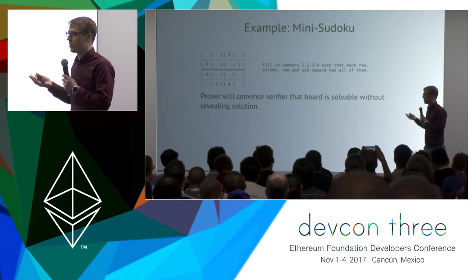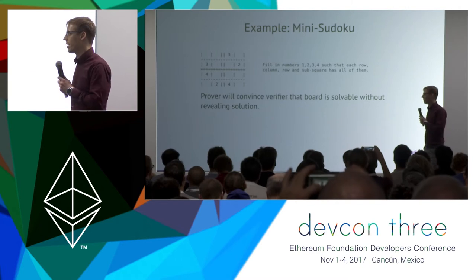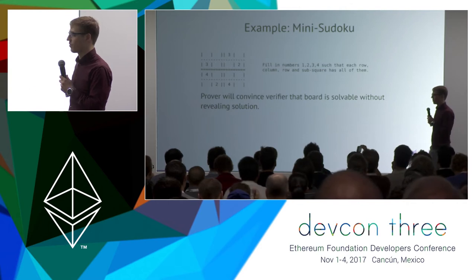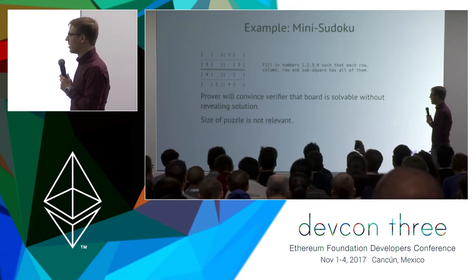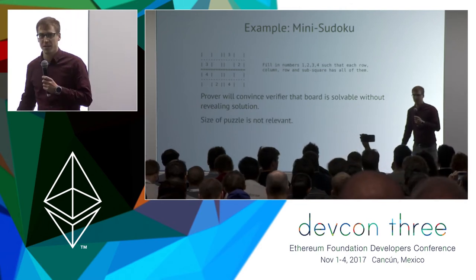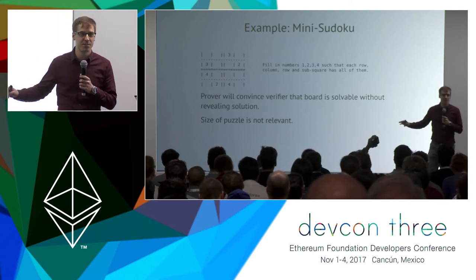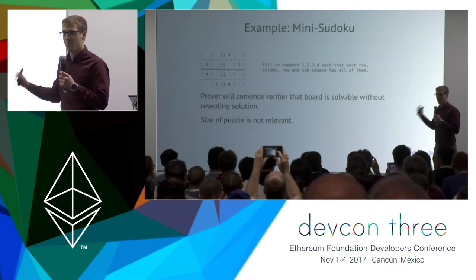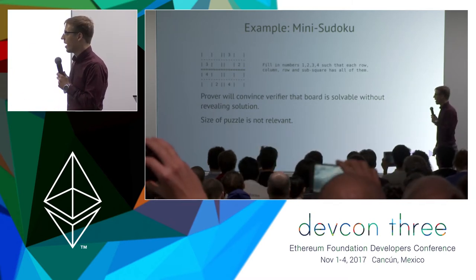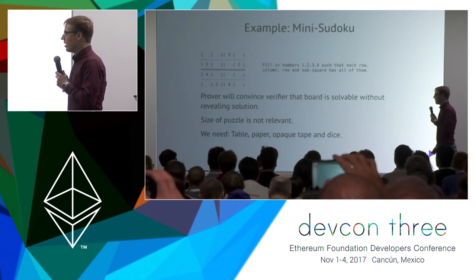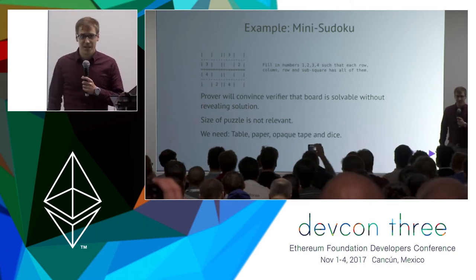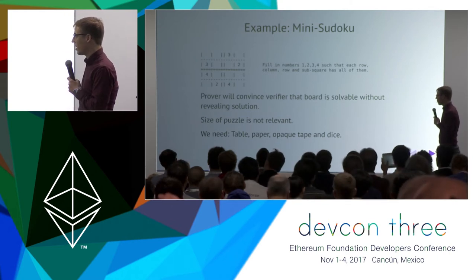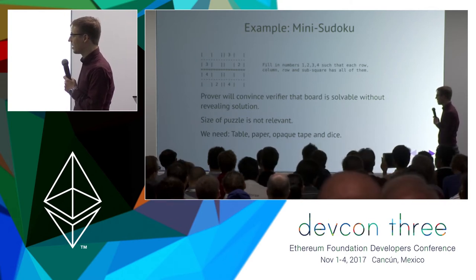In the general setting, you would also consider boards which are not solvable — in that case, the prover cannot convince the verifier. The protocol works regardless of puzzle size, whether nine-by-nine or 1,000-by-1,000 boards. The only things we need are a table, a sheet of paper, a pen, some opaque sticky tape, and a dice.